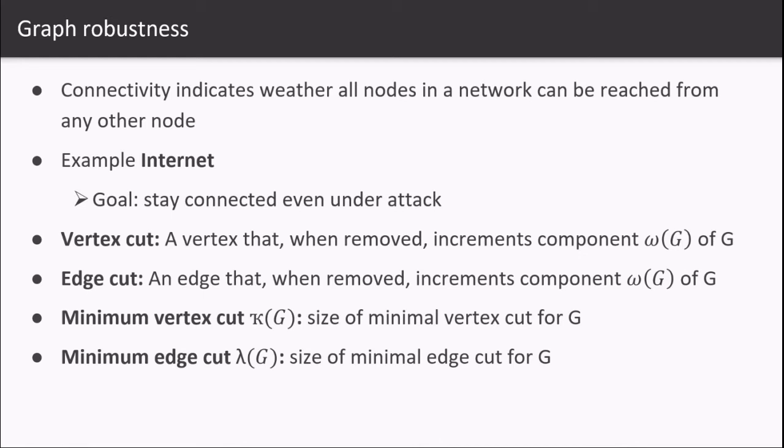We are interested in finding the minimal number of vertices or edges to remove before the graph falls apart. So a vertex cut is a vertex that, when removed, increments the component of the graph by one. An edge cut is an edge that, when removed, increases the component of the graph by one.